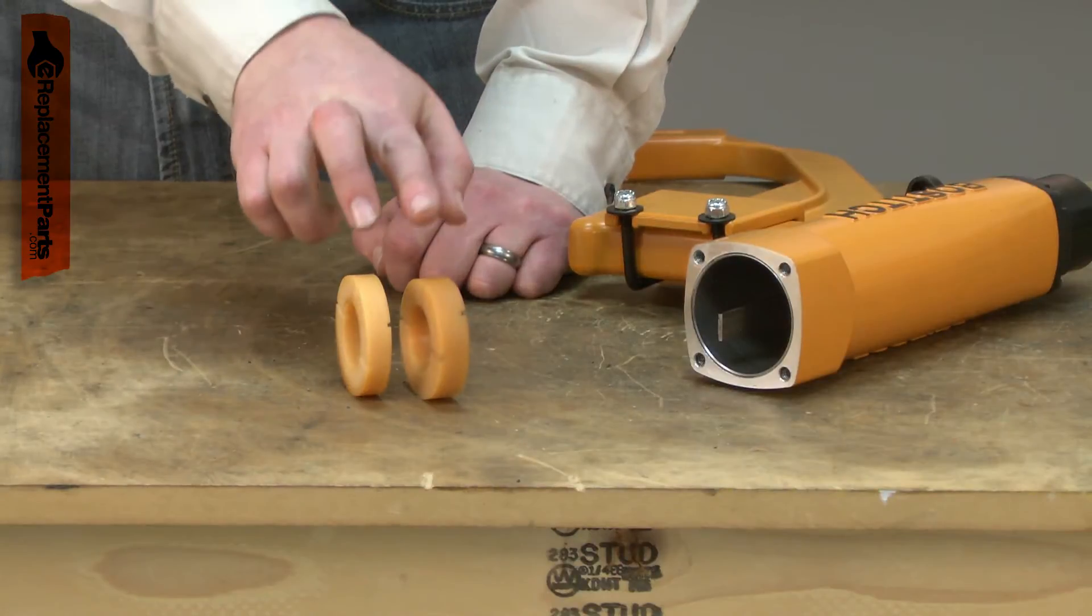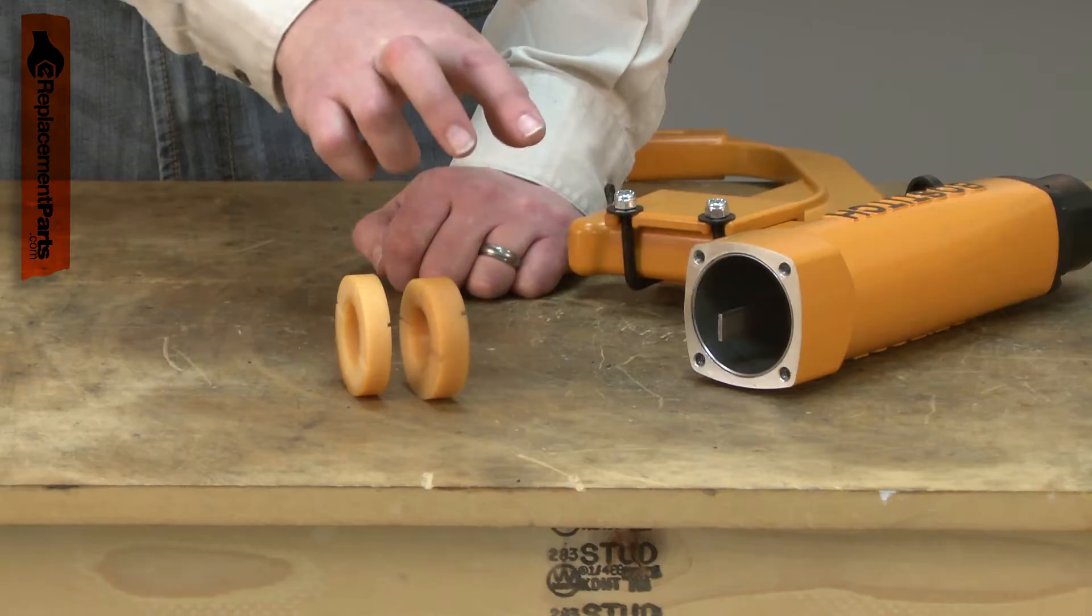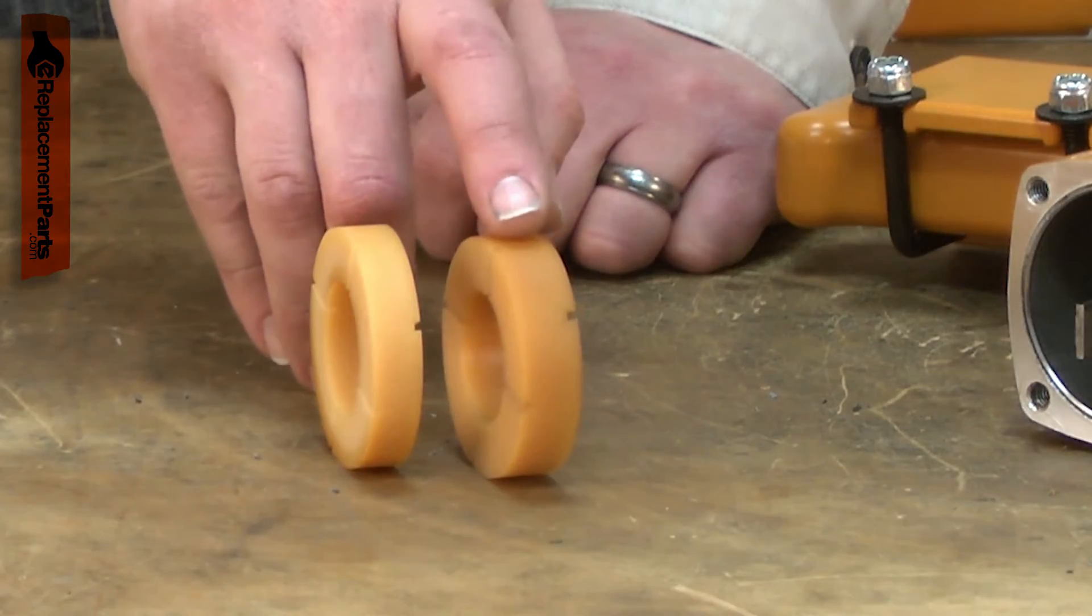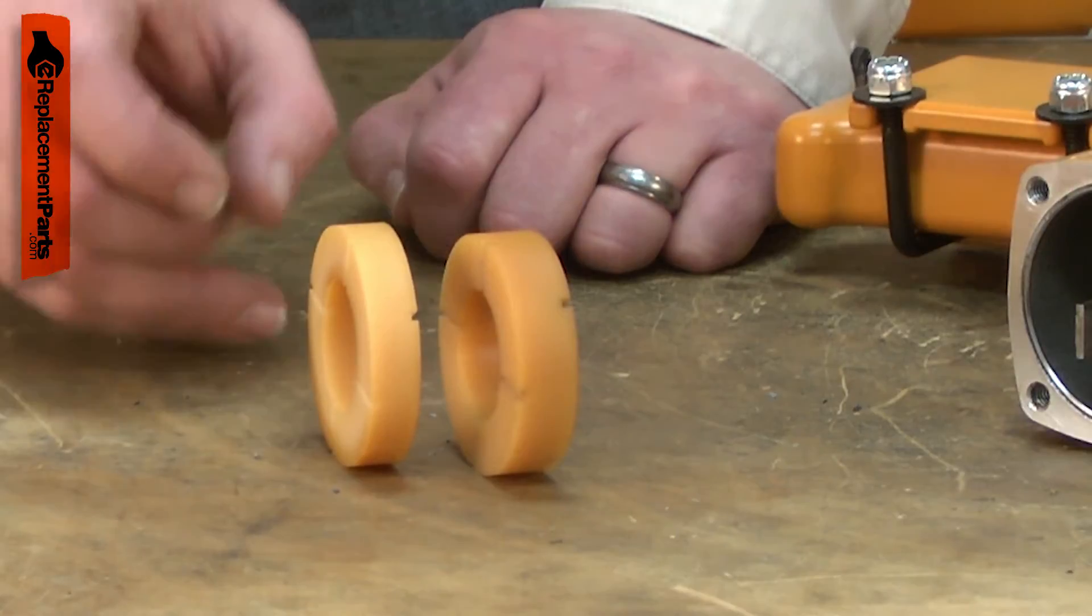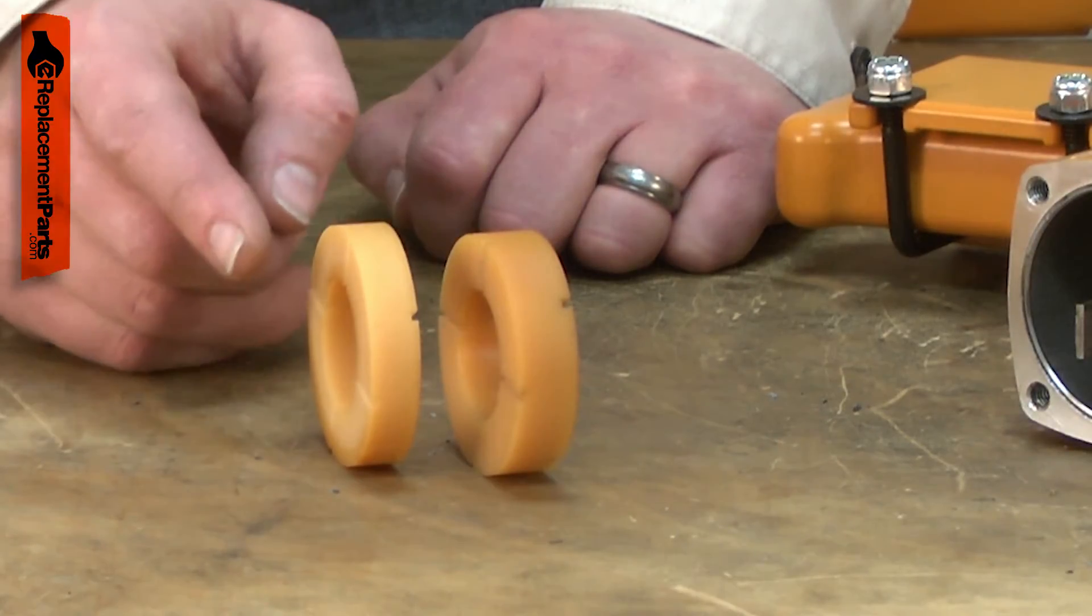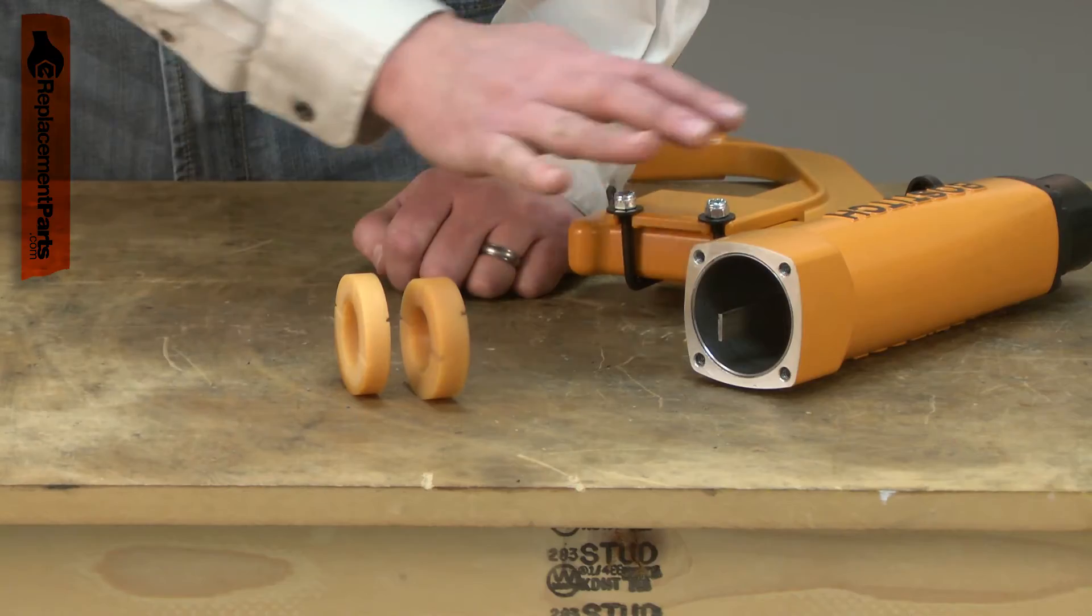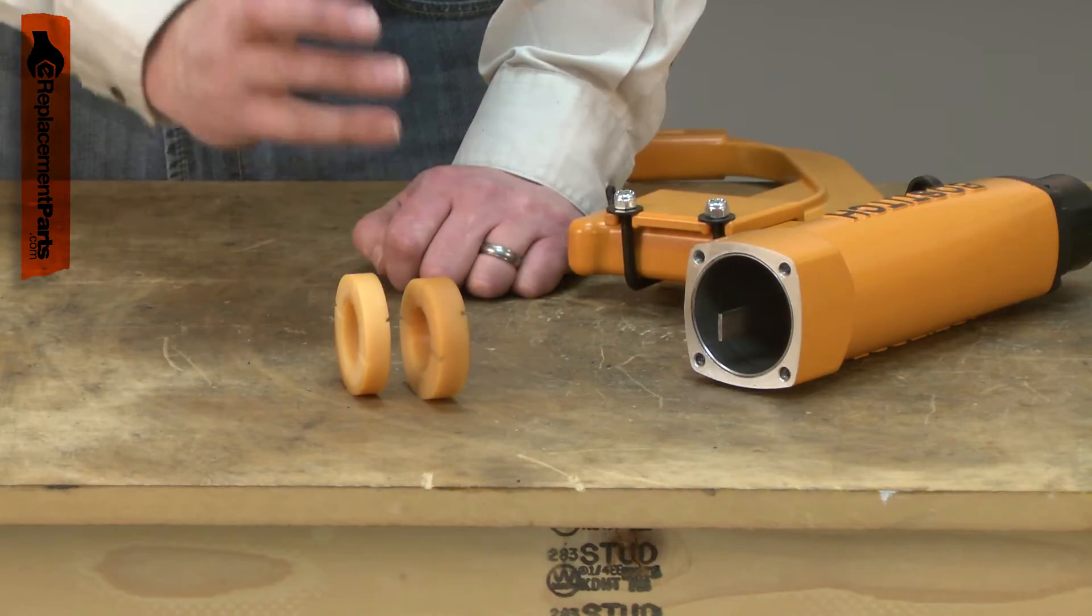There are two different bumpers used on these staplers depending on the age. The newer guns use the thicker bumper and the older guns the thinner. The older gun also has a metal spacer that goes in with it. My gun is the newer style but they install exactly the same way.